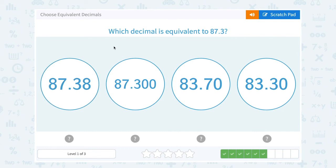Which decimal is equivalent to 87.3? That would have to be 87.300. Look really carefully because there's a lot of sevens and threes in here. We want to make sure it's the same except with some extra zeros at the end of our decimal point.